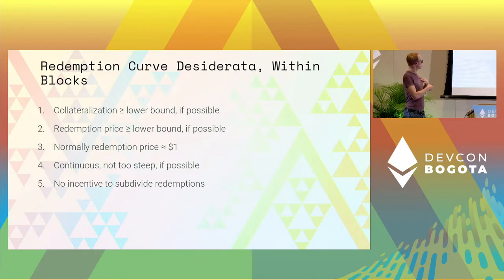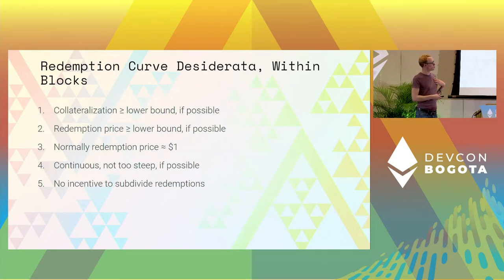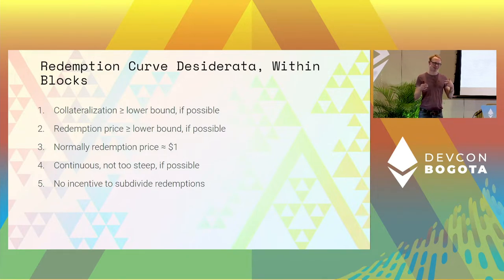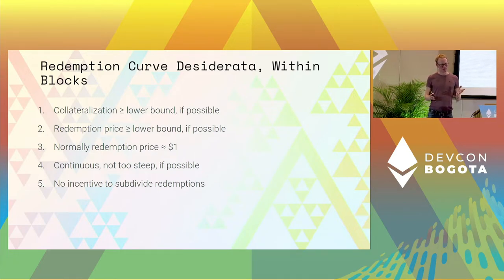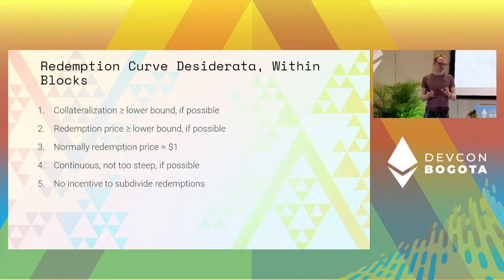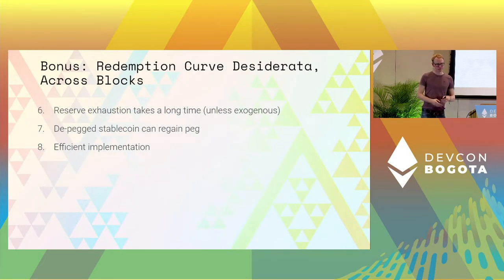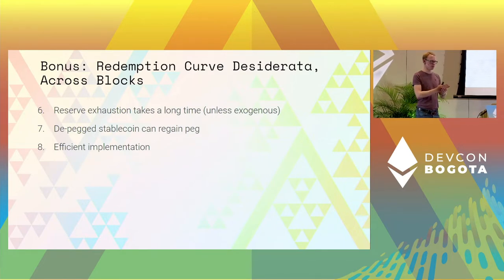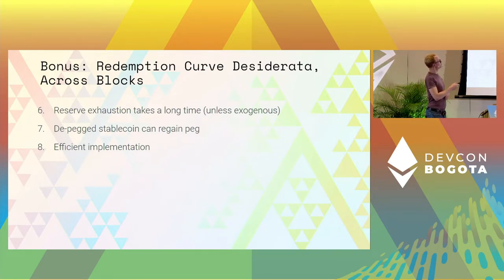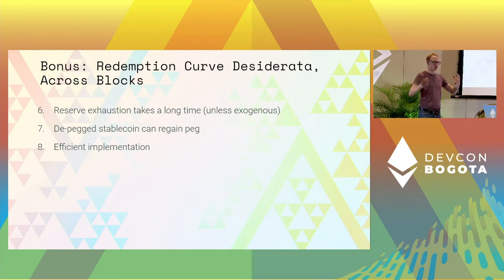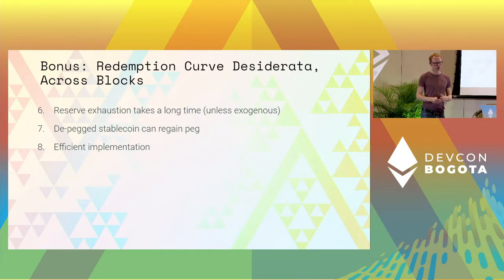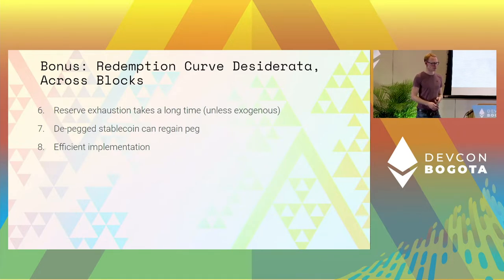You also want your redemption curve to be easy to use. When you redeem a certain amount of stablecoins — our stablecoin is going to be called Gyro Dollars — you want execution to be easy. Especially you don't want there to be an incentive to subdivide your redemptions or to be somehow clever about the way people redeem. There are also bonus desiderata across multiple transactions or blocks: you probably want reserve exhaustion to take a long time, the system should be able to regain its peg, and of course you need to implement the whole thing on-chain.